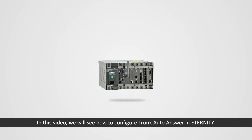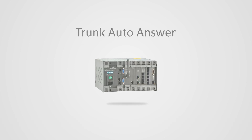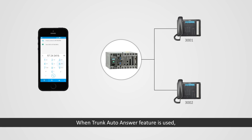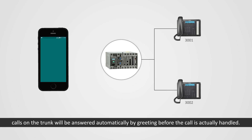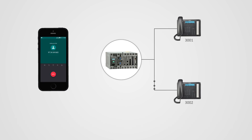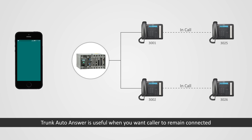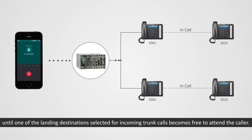Hi friends. In this video we will see how to configure trunk auto-answer in Eternity. When the trunk auto-answer feature is used, calls on the trunk will be answered automatically by a greeting before the call is actually handled. This is useful when you want the caller to remain connected until one of the landing destinations selected for incoming trunk calls becomes free to attend the caller.